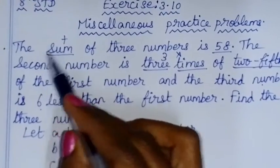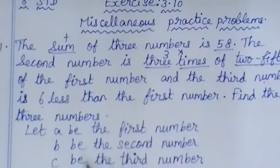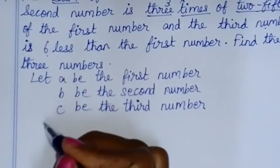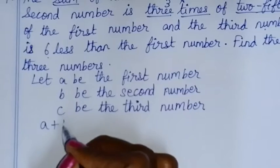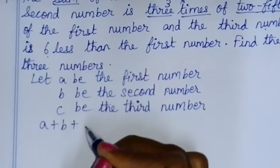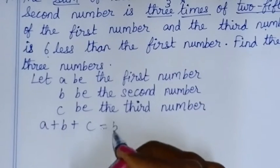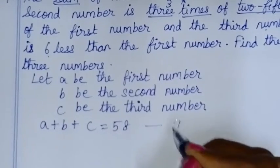First condition: the sum of 3 numbers is 58. So the 3 numbers add up to 58, which gives us: A plus B plus C is equal to 58. This is our first equation.